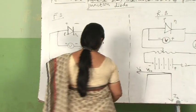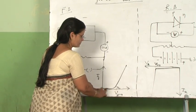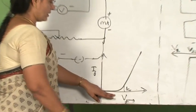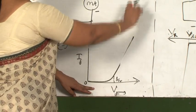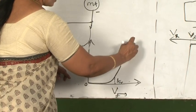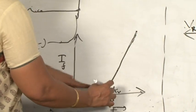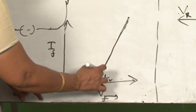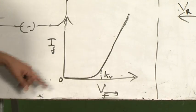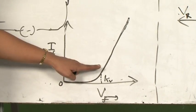So this junction diode will start conducting current only after the overcoming of potential barrier. That is why in this graph, this portion represents the value of potential barrier. After that is overcome, then the current starts increasing. So if you see the diagram, after the voltage called knee voltage, the current increases almost linearly with voltage. So this is the linear portion of the graph.